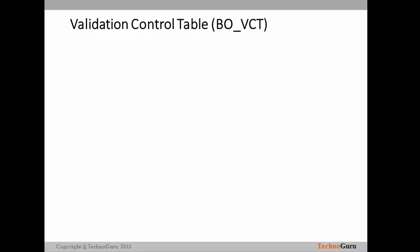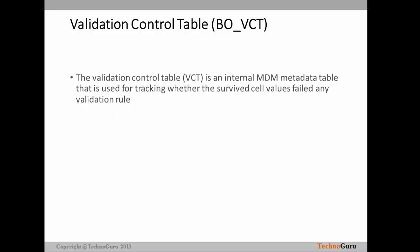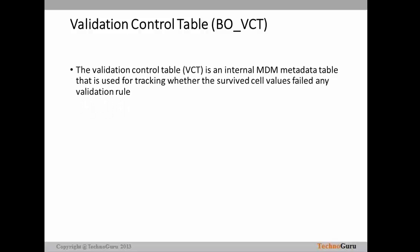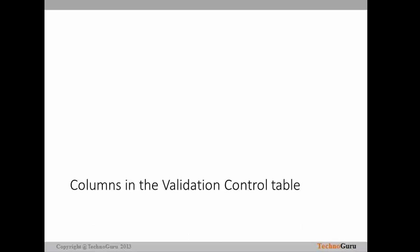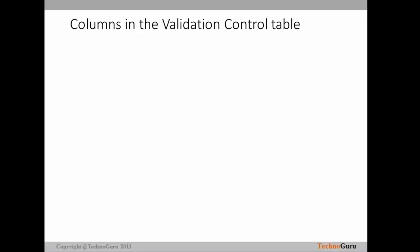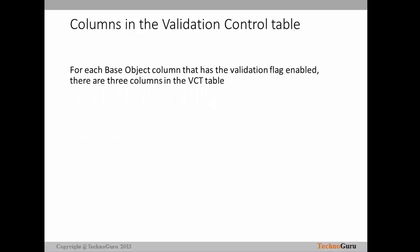The second table is the validation control table, appended with VCT. The validation control table is an internal MDM metadata table used for tracking whether the survived cell values failed any validation rule. If the validation rule fails, then the appropriate value will be populated.